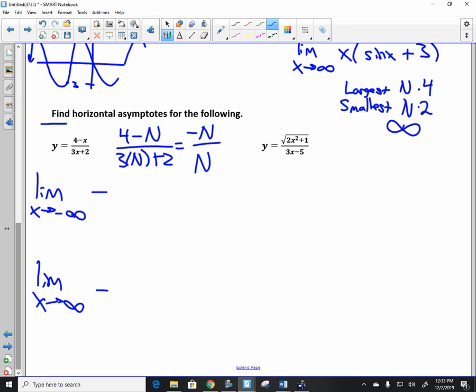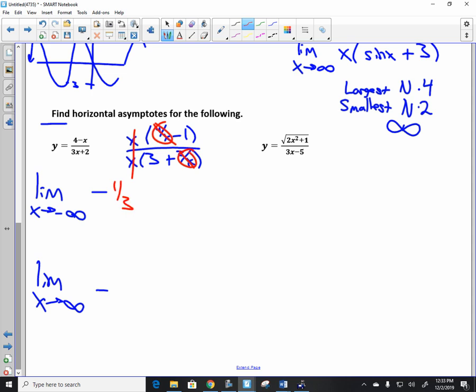Very good. Let's now determine the value. What do we factor out at the top? x. Factor out x and you're left with four over x minus one. Factor x at the bottom and you're left with three plus two over x. What happens to the four over x and the two over x? What happens to the x over x? What are you left with? Negative one third. It ended up to be negative, didn't it? Exactly. So negative one third and negative one third.